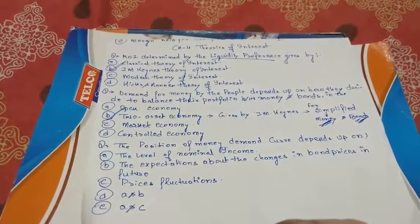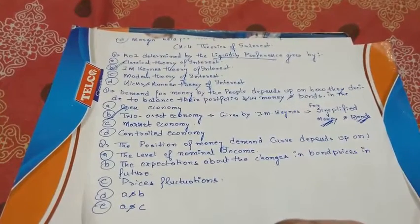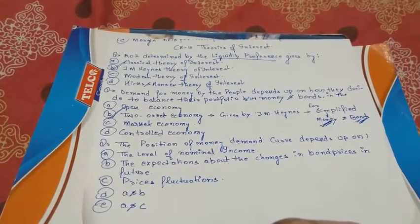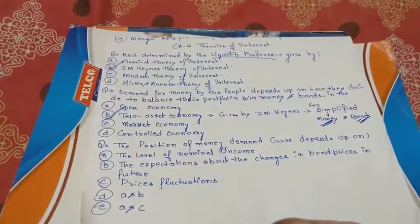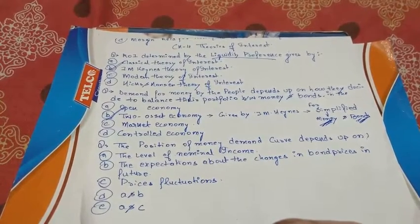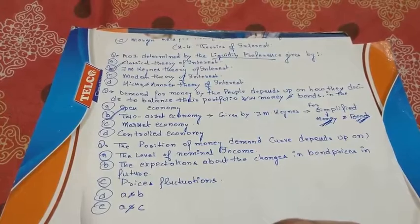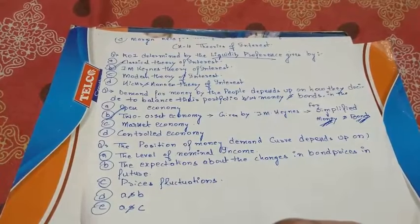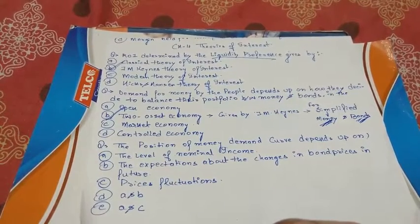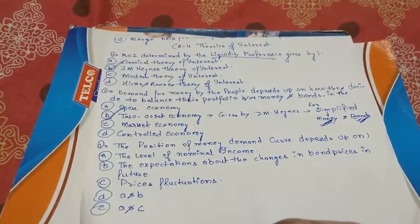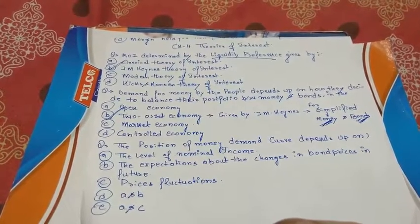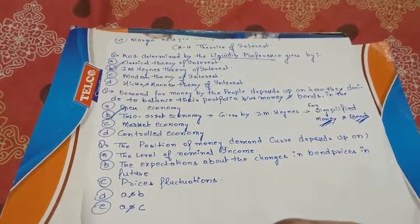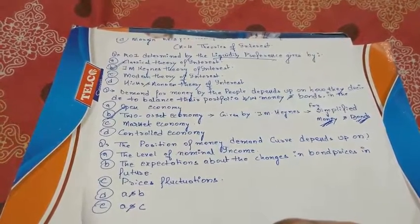The first question: the rate of interest is determined by the liquidity preference given by... Before answering, let me give some basics. The theories of interest deal with how the interest rate in the market is defined. There are three types of theories: the Classical Theory, the JM Keynes theory (also known as the Liquidity Preference Theory), and the Hicks and Hansen theory (also known as the IS-LM curve).